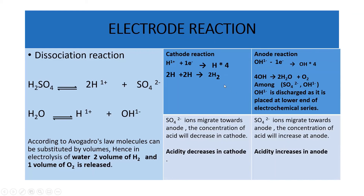What is the volume of gas released? Two volumes of hydrogen and one volume of oxygen are released. According to Avogadro's law, molecules can be substituted by volumes. Instead of saying two hydrogen molecules, we can substitute them by volume. That is the reason we write two volumes of hydrogen and one volume of oxygen. This is also a frequently asked question.